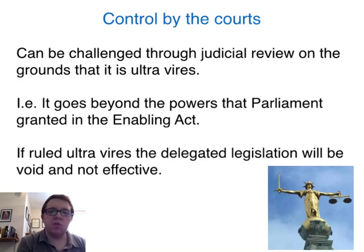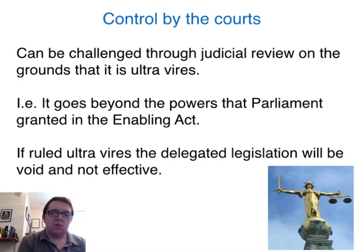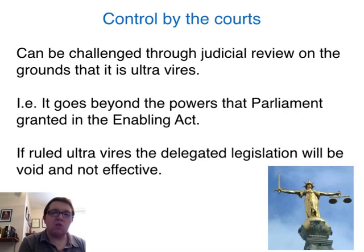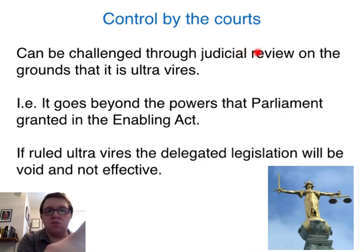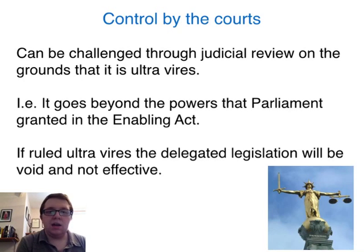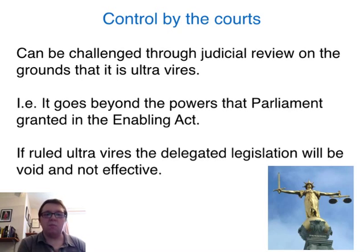Having looked at control by parliament, once the statutory instrument has been made there may still be problems with it, so we turn to control by the courts. If there is an issue — and often this might mean that it's ultra vires, meaning it goes beyond the powers that parliament granted in the Enabling Act — it could be that a government minister is creating statutory instruments never intended by parliament or essentially abusing the process. This can be challenged through a hearing known as judicial review, which takes place in the High Court, where a judge can examine the statutory instrument on grounds of ultra vires. If it's ruled to be ultra vires, the legislation will become void and not effective.